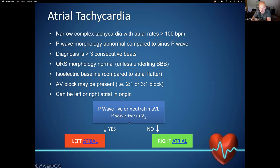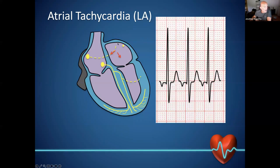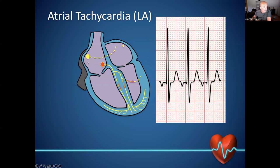Atrial tachycardias tend to be quite quick, so we often get two-to-one or three-to-one heart block. They can occur in both the left and right atrium. We can make a decision on whether it's likely to be left or right atrial in origin by looking at the P wave. If it's negative or neutral in AVL, we expect it to be in the left atrium. If it's positive in V1, again we expect it to be in the left atrium.